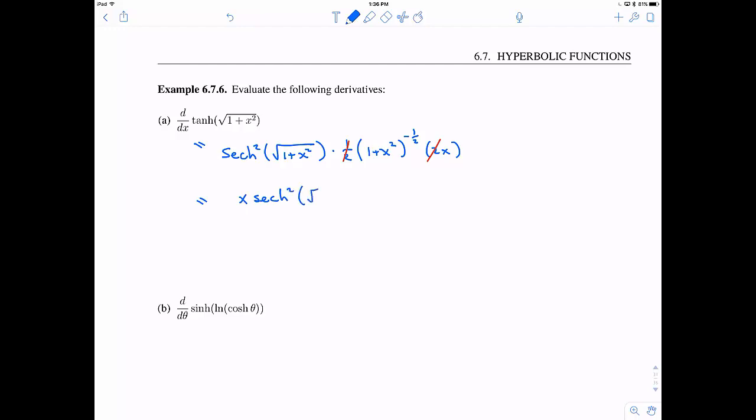Simplify, rearrange the functions a little bit, and we see we have x times hyperbolic secant squared of square root of 1 plus x squared, all over square root of 1 plus x squared.